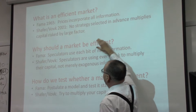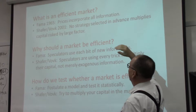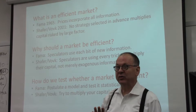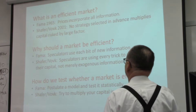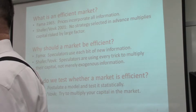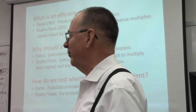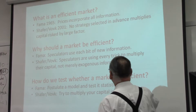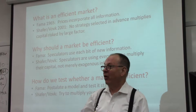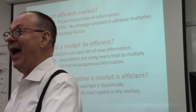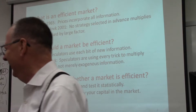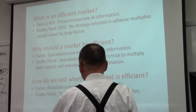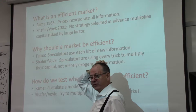In 1965, Eugene Fama, who got a Nobel Prize for this, wrote a paper about how an efficient market is one in which prices incorporate all the information. In 2001, we gave our definition of an efficient market: Cournot's principle — no strategy selected in advance will multiply your capital by a large factor. It's always true that something unlikely happens, and after the fact you can always figure out how you could have made money. But you're not going to find a strategy in advance that will multiply the capital you risk by a large factor.